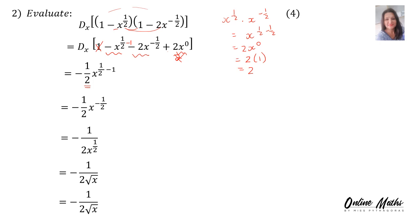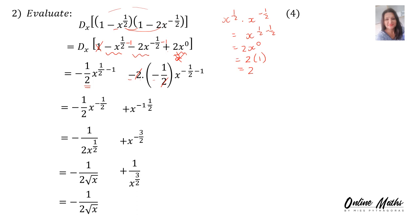For the second term, to find the derivative, the minus a half goes to the front and multiplies the minus 2 that's already there. Back to the exponent, we subtract 1: minus a half minus 1. A minus times a minus is a plus, and the 2 and 2 cancel. On the x, the exponent is minus a half minus 1, which is minus 3 over 2. That's the answer. If you want positive exponents, it becomes 1 over x to the 3 over 2, or 1 over the square root of x cubed.